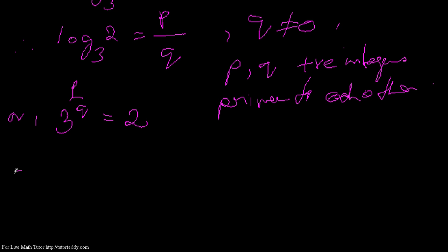That means 3 to the power P by Q equals to 2 means you have 3 to the power P equals 2 to the power Q. This is again the formula.